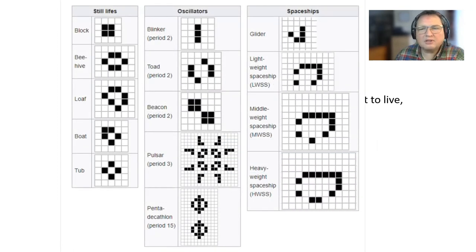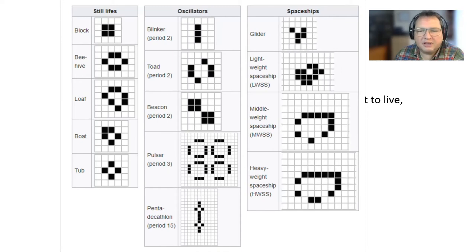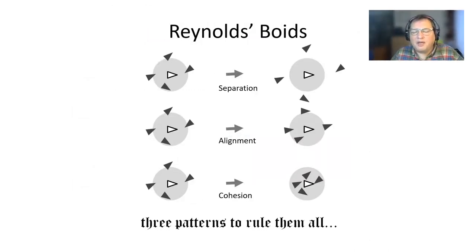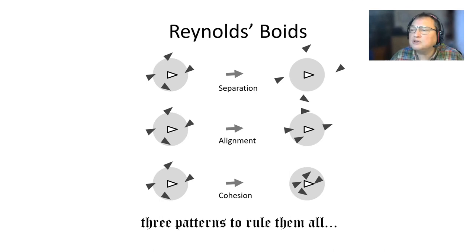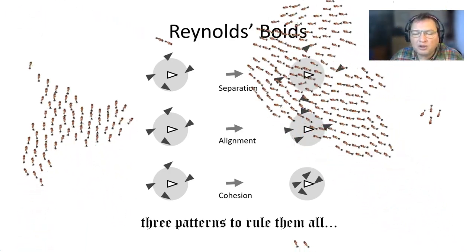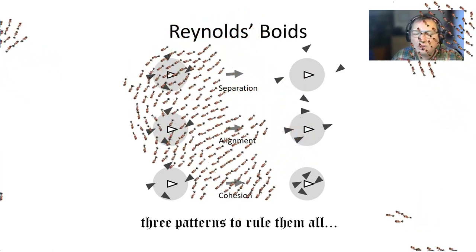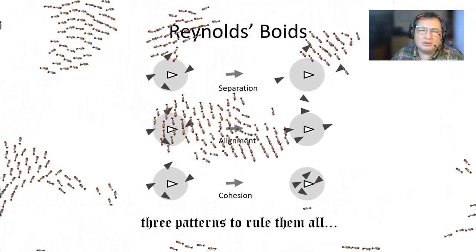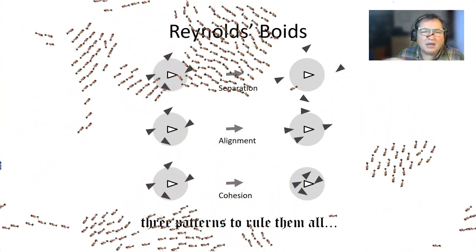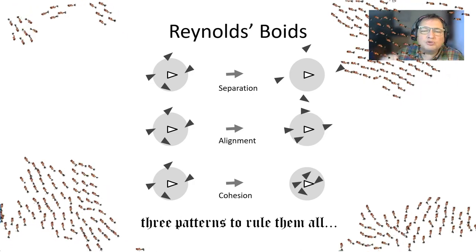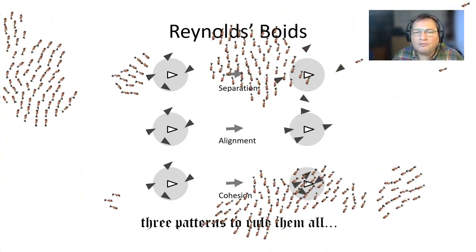Here you can enjoy a wider selection of life patterns thanks to Wikipedia. Reynolds' Boids make one more example of emergent systems, quite important for games because they are often used to simulate crowds or flocks. Each individual is governed by three rules applied only to its closest neighborhood, not to the whole flock.